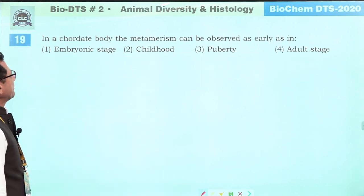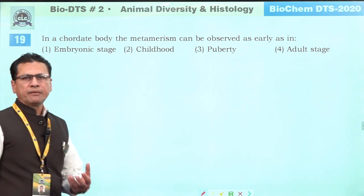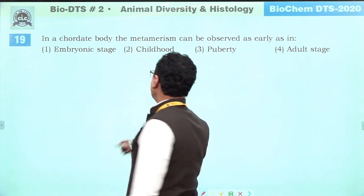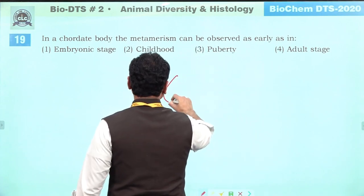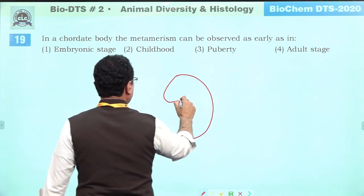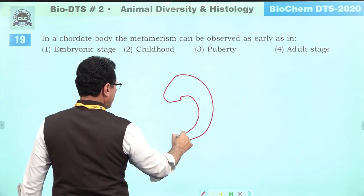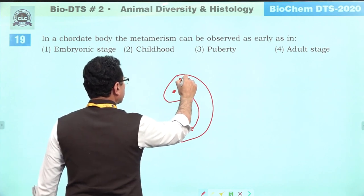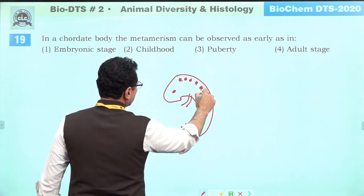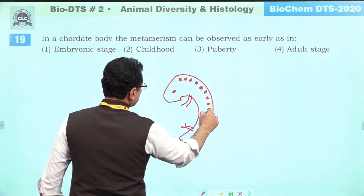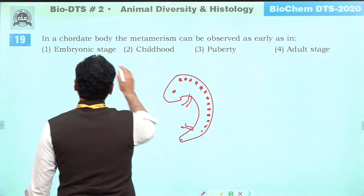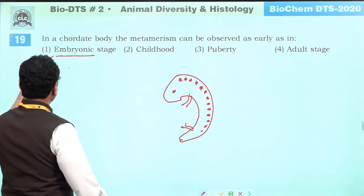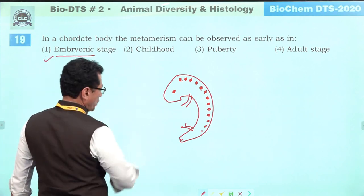In a chordate body, metamerism can be observed as early as the embryonic life. Metamerism is a phenomenon that can be seen from embryonic life in the form of somites. These somites show metamerism — they are segments visible in the embryo. So the earliest it can be seen is in embryonic life. Answer is one.